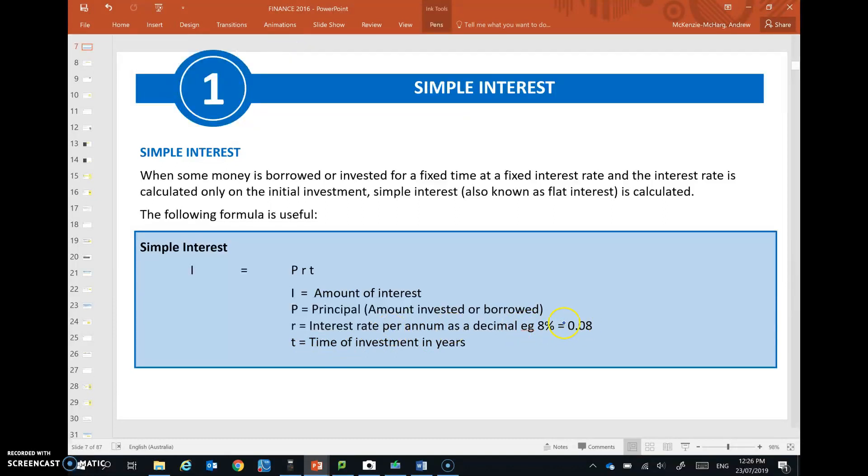Multiplied by the time of the investment in years. So the important parts here are that you change the rate, which is usually shown as a percentage. You divide that by 100 to turn it into a decimal, and with the time in years, if it's not given in years, you need to change it into years. So those are the two trickier parts.